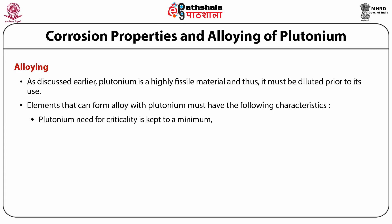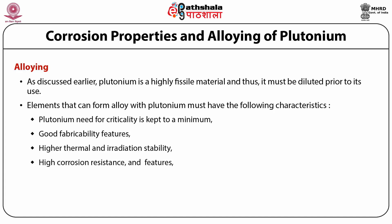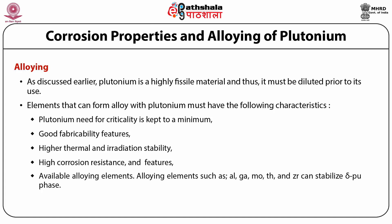Elements that can form alloys with plutonium must have the following characteristics: first, the amount of plutonium needed for criticality is kept to a minimum; second, good fabricability; third, higher thermal and irradiation stability; fourth, high corrosion resistance; and lastly, availability of alloying elements.